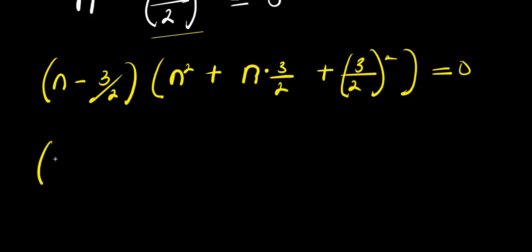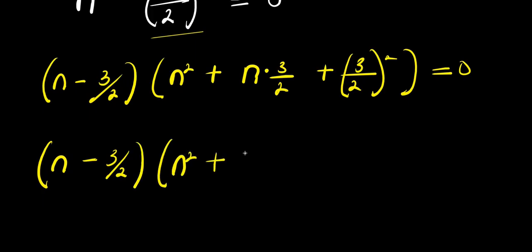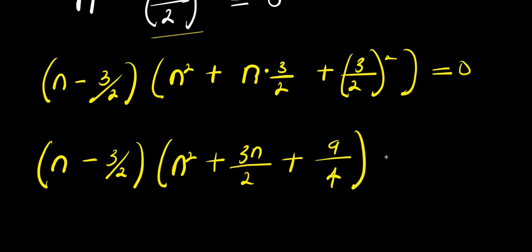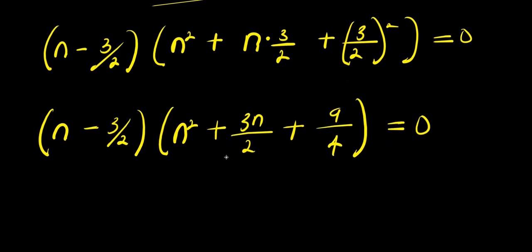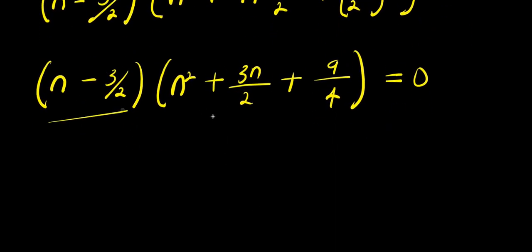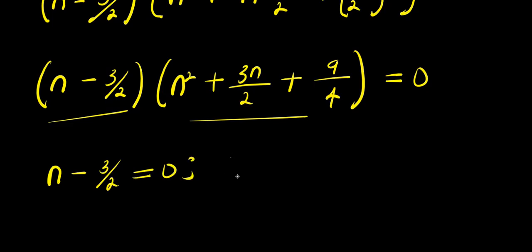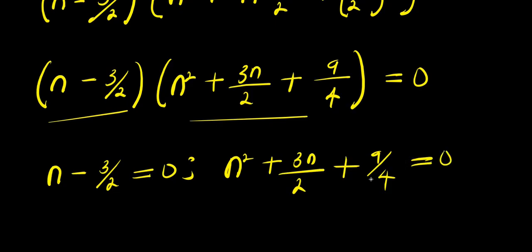Expanding, we have (n minus 3/2) times (n squared plus 3n/2 plus 9/4) equals 0. We can now equate each factor to zero. Setting the second factor to zero gives n² plus 3n/2 plus 9/4 equals 0.